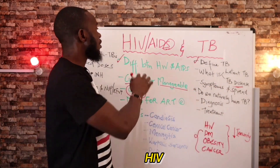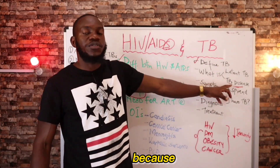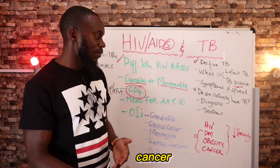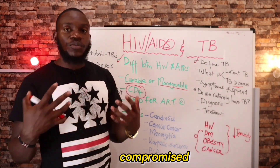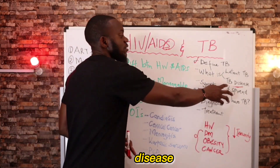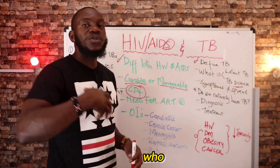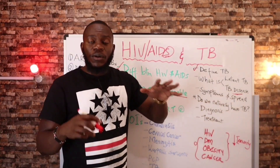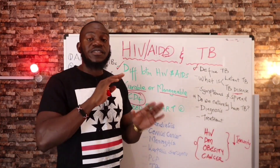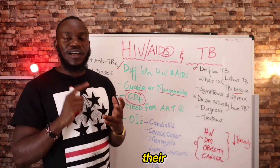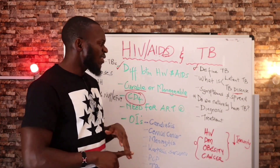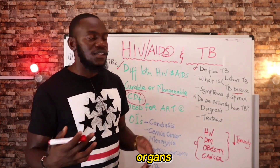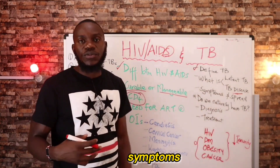People who have HIV can acquire TB disease directly because their immunity is already compromised — same for people who have cancer. Since your immunity is already compromised, you can acquire TB disease from a person who is symptomatic. TB affects different organs in the body: the kidneys, the brain, the liver, and the lungs. Depending on the organs affected, the symptoms will differ.